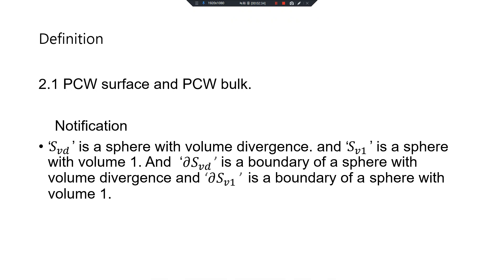Definition: PCW Surface and PCW Bulk. Notation: SVD is a Sphere with Volume Divergence. SV1 is a Sphere with Volume 1. DSVD is the Boundary of a Sphere with Volume Divergence. DSV1 is the Boundary of a Sphere with Volume 1.